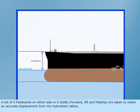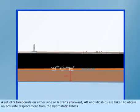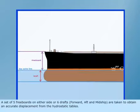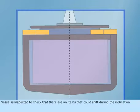A set of 5 freeboards on either side or 6 drafts forward, aft and midship are taken to obtain an accurate displacement from the hydrostatic tables. Vessel is inspected to check that there are no items that could shift during the inclination.